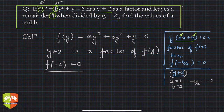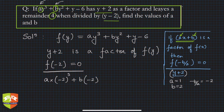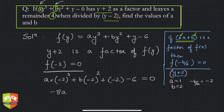Let's evaluate f(−2). Substituting y = −2 wherever we see y: a(−2)³ + b(−2)² + (−2) − 6 = 0. This gives −8a + 4b − 2 − 6 = 0, which simplifies to −8a + 4b − 8 = 0.